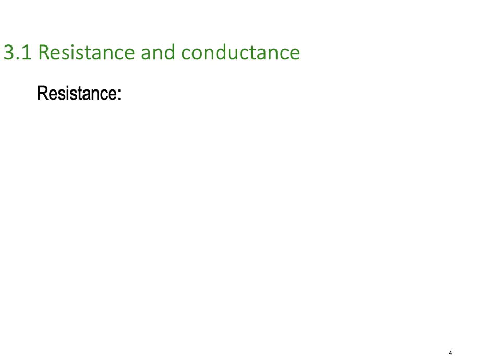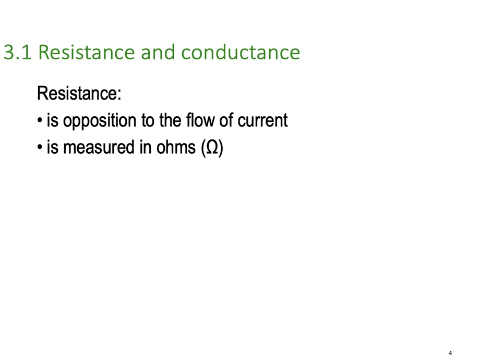Resistance is the opposition to current flow — that's the basic definition. Resistance is that which opposes current flow, and we measure it in ohms, named after George Ohm, an English physicist. We also use the symbol capital R. So measured in ohms, and we use the Greek symbol omega.